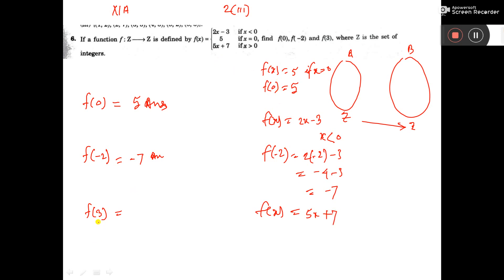Because f(3) we are going to calculate, and 3 is greater than 0, so 5x plus 7. So here you put x equal to 3, then it is coming 5 times 3 plus 7, that is equal to 15 plus 7, that is equal to 22.